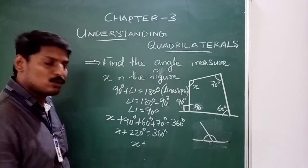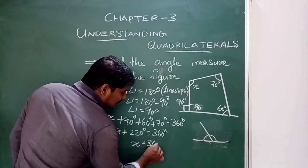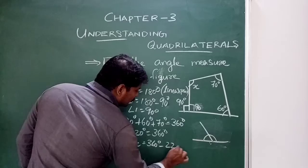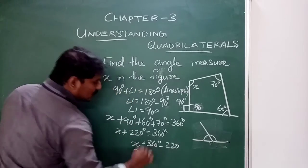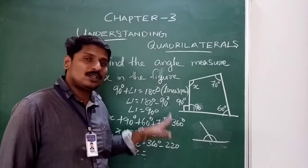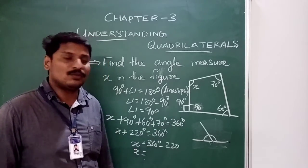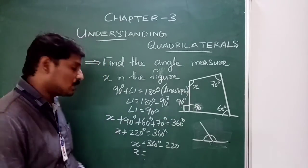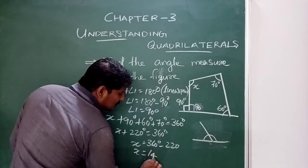Left and right, 360 degrees minus 220 degrees. X is equal to 360 minus 220. So x is equal to 140 degrees. X is equal to 140 degrees.